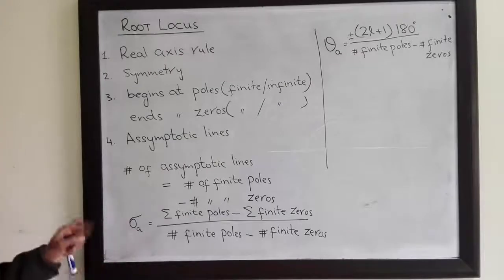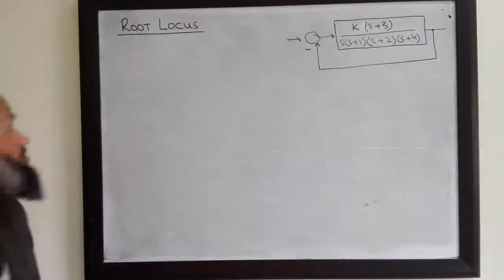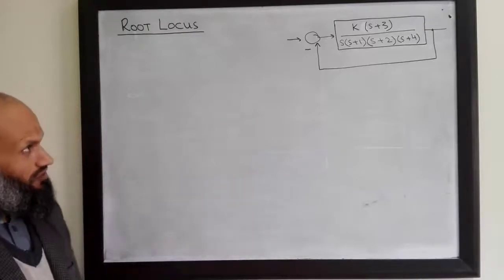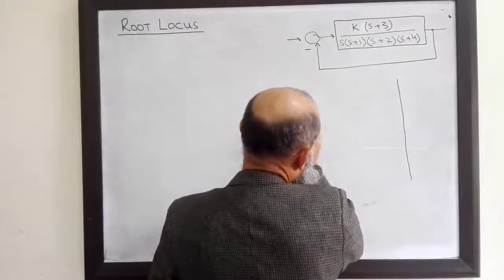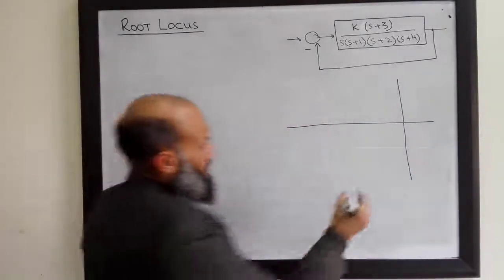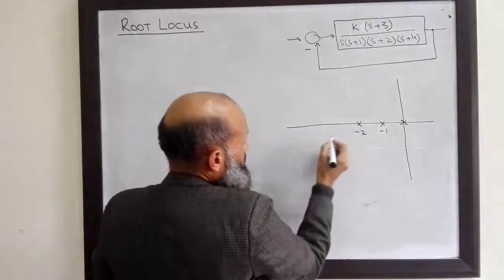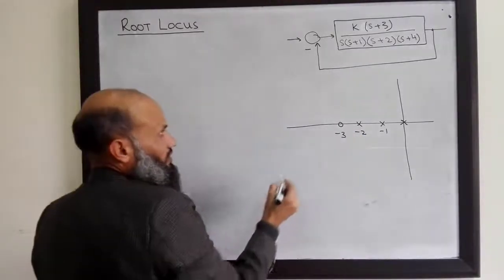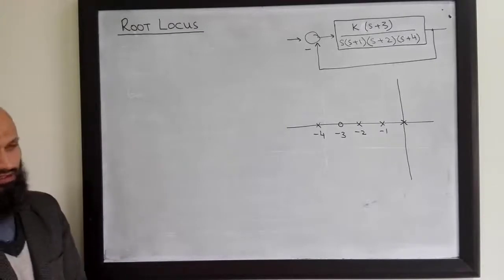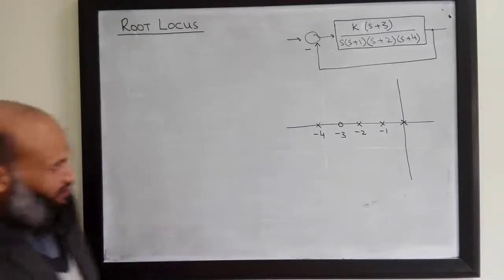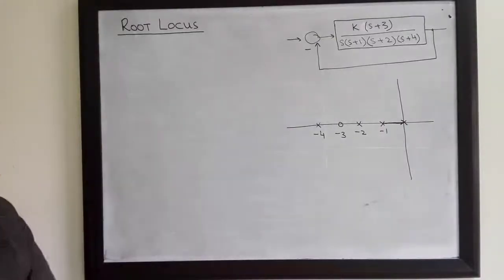To demonstrate how this third rule helps us sketch the root locus, consider a unity feedback closed-loop system. We locate the open-loop poles and zeros: a pole at the origin, another pole at s = -1, another pole at s = -2, a zero at s = -3, and a fourth pole at s = -4. Applying the real axis rule, we see that the segment between origin and -1 is part of root locus, the segment between -2 and -3 is part of root locus, and the segment to the left of -4 is also part of root locus, because to the right of these points there are odd numbers of poles and zeros.